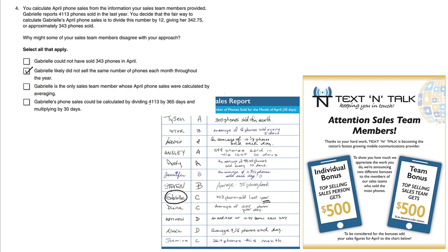Choice D: Gabrielle's phone sales could be calculated by dividing her total sales for the year by 365 days, giving a number of phones sold per day, then multiplying by 30. That's a legitimate approach. This is similar to what we did previously — dividing 4113 by the number of months — but slightly different because each month does not have exactly 30 days. Either way, both approaches could cause contention among team members. So we choose B and D.